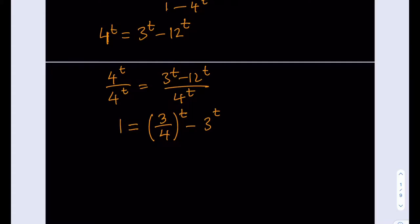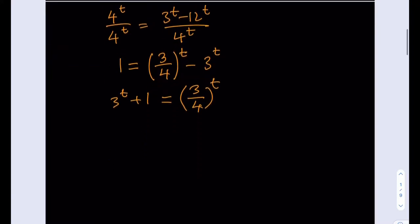In this form, this is not very helpful. So what I'm going to do is isolate 3 over 4 to the power t. I'm going to add 3 to the power t to both sides. So that's going to be 3 to the power t plus 1 equals 3 over 4 to the power t. Now this is good because, as we know, 3 fourths to the power t is a decreasing function because the base is less than 1, and this is an increasing function because the base is greater than 1.